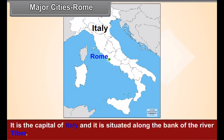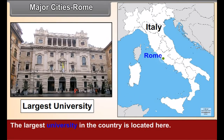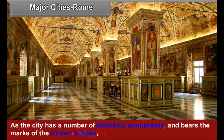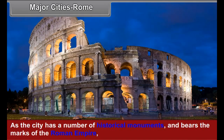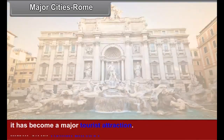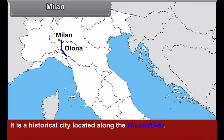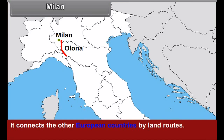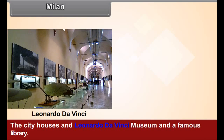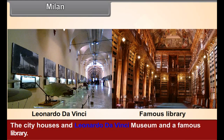Major cities — Rome: it is the capital of Italy, situated along the bank of the river Tiber. The largest university in the country is located here. Milan: it is a historical city located along the Olona River. It connects other European countries by land routes. The city houses the Leonardo da Vinci Museum and a famous library.